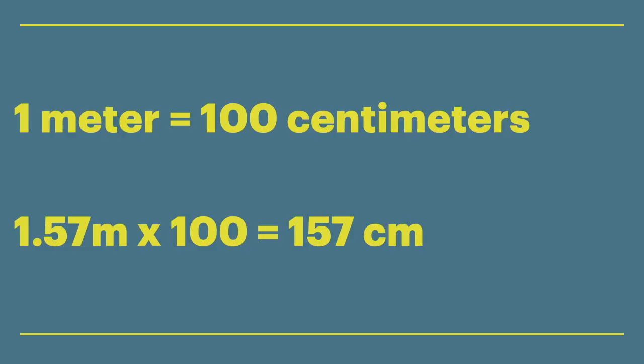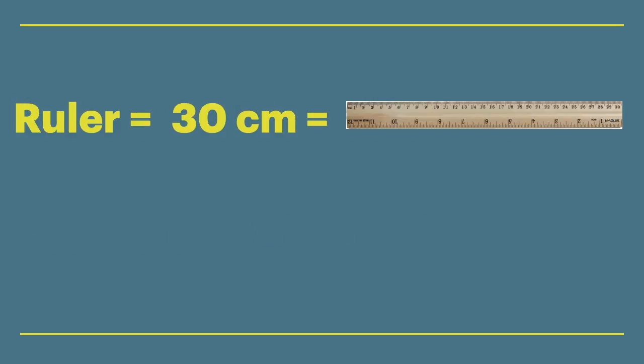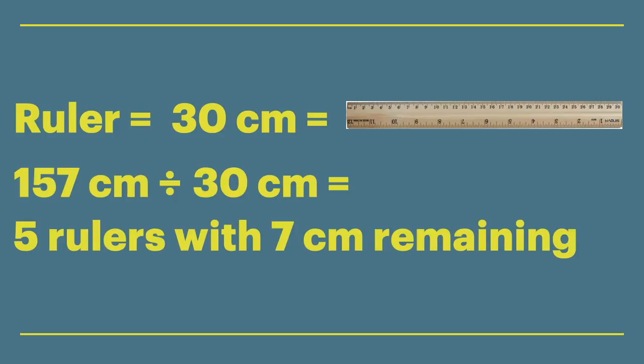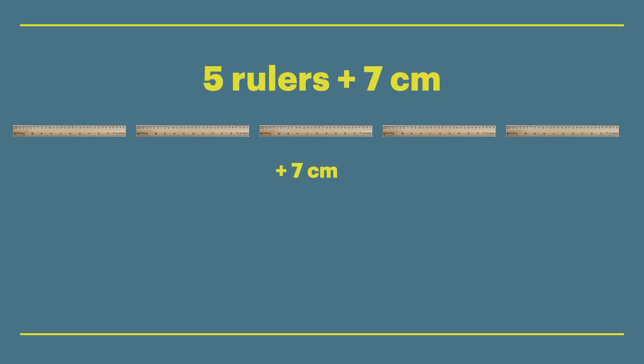But to make our string measurements even easier, we're going to make one more conversion. We're going to convert our centimeters to ruler lengths. So a ruler is 30 centimeters. We can divide 157 centimeters by 30 centimeters to get 5 ruler lengths with 7 centimeters remaining. So that way we can easily measure our strings simply with 5 rulers plus 7 centimeters. With those measurements, we'll be able to create our biodiversity sampling tools with our string with a half meter diameter.